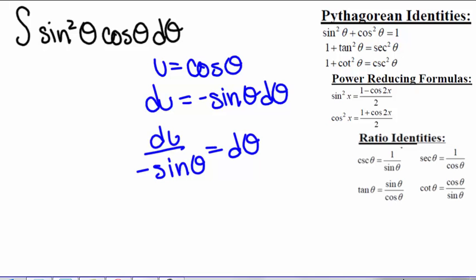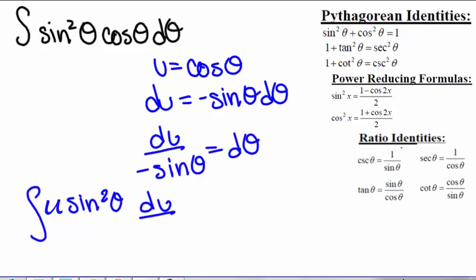If we plug that in, we get the integral of sine squared theta times du over negative sine theta. One of these sine of thetas is going to cancel out. However, we're still going to get the integral of negative sine of theta du — we have something with both thetas and u's, and that's not helpful. So we don't want to let u equal cosine of theta.